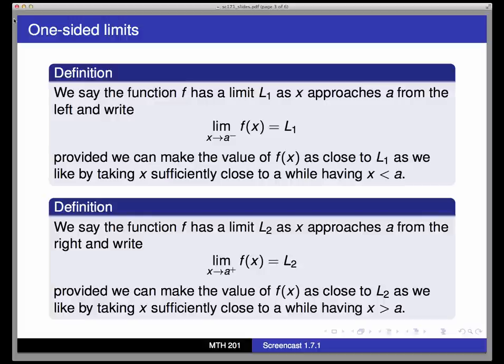Likewise, we're going to say that f has a limit L2 as x approaches a from the right, and we're going to write this notation. If we can make the value of f of x as close to L2 as we like by taking x sufficiently close to a while having x bigger than a. And here, the little plus sign in the limit notation means that we're approaching a only from the right of a.